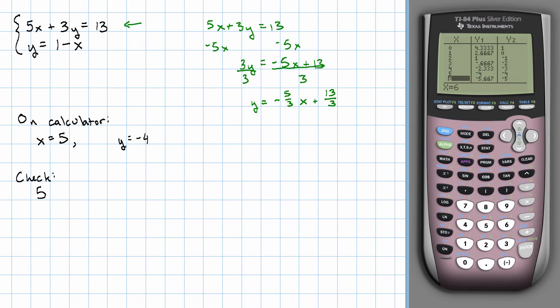5 times 5 plus 3 times negative 4. That's going to be 25 minus 12, which is 13. Is it true that negative 4 equals 1 minus 5? Sure does. That works, too. The solution we found from the table on the calculator really does work.